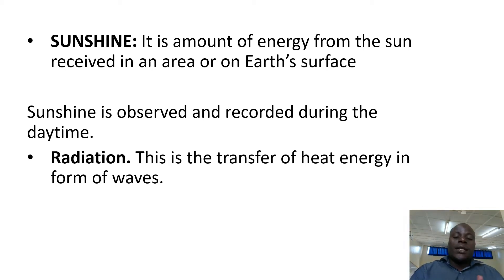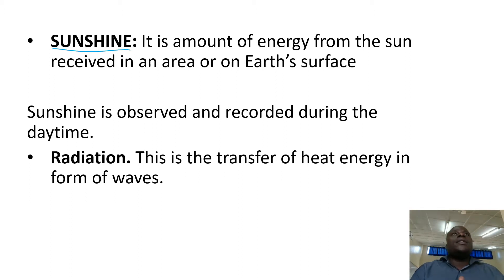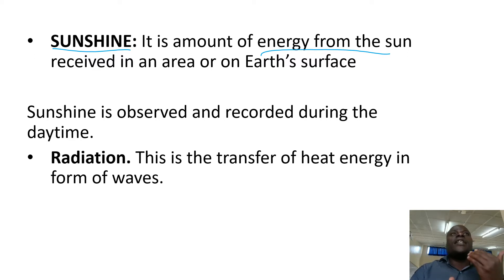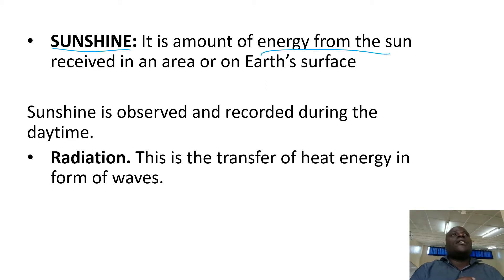So what is sunshine? It is the amount of energy from the Sun received in an area or on Earth's surface. The amount of energy from the Sun an area or Earth's surface receives is what we call sunshine.